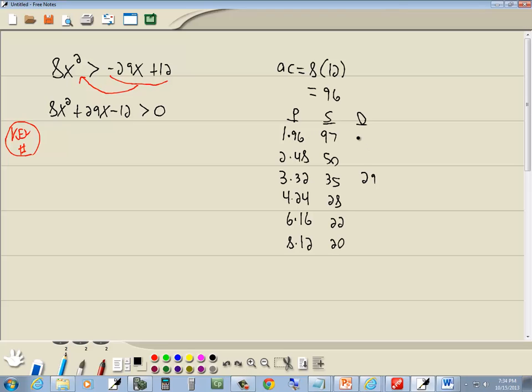Subtract them. 96 minus 1 is 95. 48 minus 2 is 46. 32 minus 3 is 29. 24 minus 4 is 20. 16 minus 6 is 10. 12 minus 8 is 4. Now the number we're looking for is the number in the middle term, which is 29, which is right here. So I'm going to use 3 and 32.